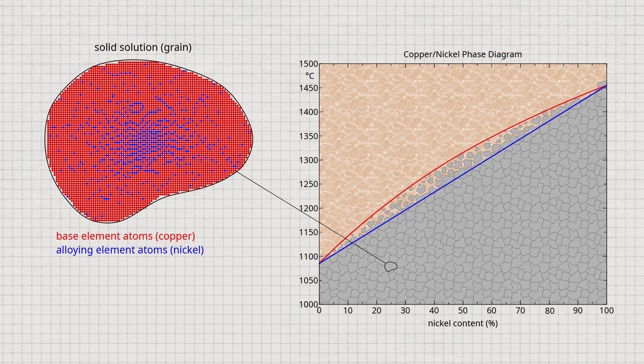The reasons why crystal segregation occurs during the solidification of alloys are discussed in the following. The formation of segregations can be clearly understood using the phase diagram. To illustrate this, the solidification of a copper-nickel alloy containing 30% nickel will be considered.